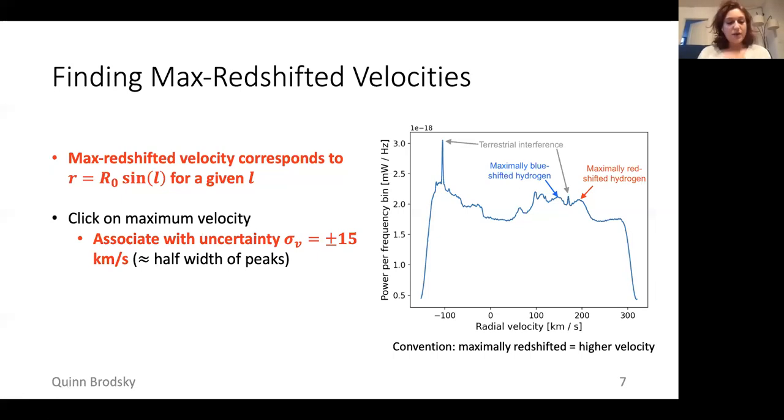Once we're able to identify these velocities for all given lines of sight L, we can calculate the corresponding R using that expression. This will give us our rotation curve.